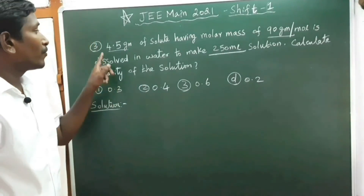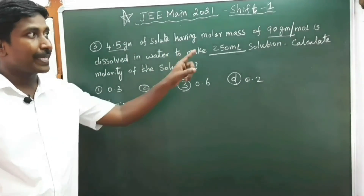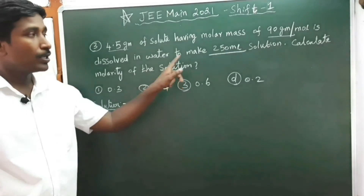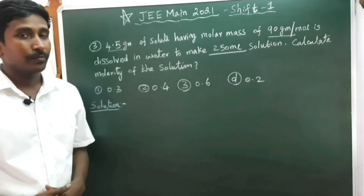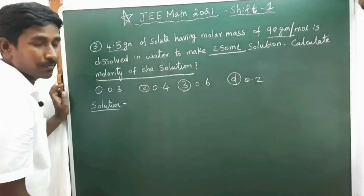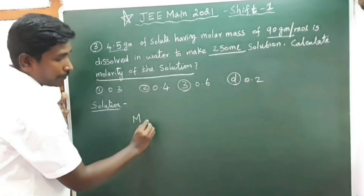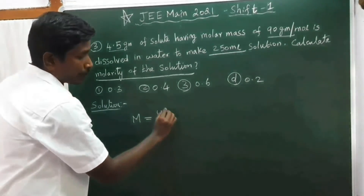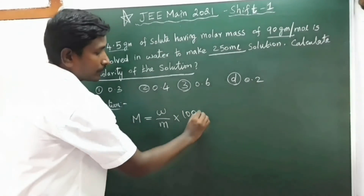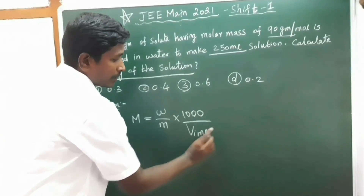Question number 3: 4.5 grams of a solid having molar mass of 90 grams per mole is dissolved in water to make 250 ml solution. Calculate the molarity of the solution. The molarity formula is: Molarity M = (weight of solid ÷ molecular mass of solid) × (1000 ÷ volume in mL).